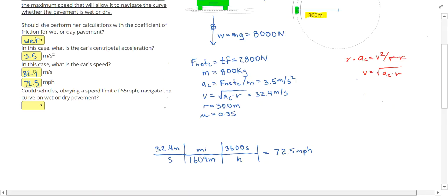It said, could vehicles obeying a speed limit of 65 miles per hour navigate the curve on wet or dry pavement? Well, we know that the cars can safely navigate the curve at 72.5 miles per hour. So anything lower than this should be safe. So my correct answer is yes.